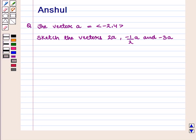Hello and welcome to the session. In this session, we are going to discuss the following question: vector A is equal to the ordered pair minus 2, 4. Sketch the vectors 2 into vector A,